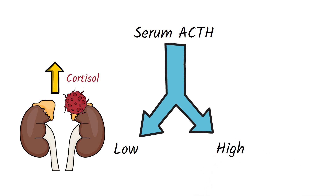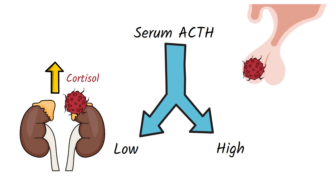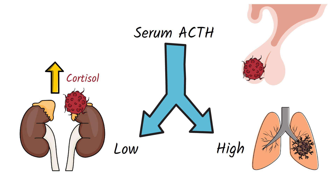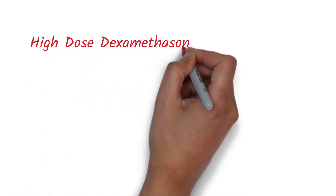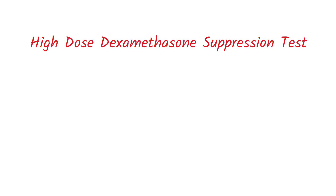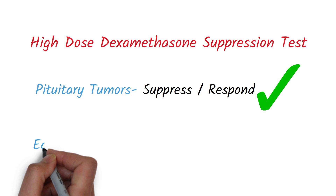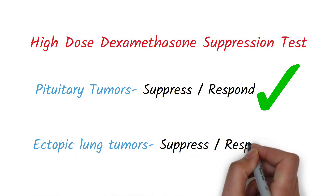A high serum ACTH level indicates that we are dealing with an ACTH-dependent cause of Cushing's syndrome, meaning the high serum cortisol is due to high ACTH levels, which could be due to a pituitary tumor or an ectopic ACTH-producing lung tumor. In this case, we can do a high-dose dexamethasone suppression test to find out which of these it is. A high-dose dexamethasone injection is more likely to suppress pituitary tumors, but less likely or shows no response to ectopic lung tumors.